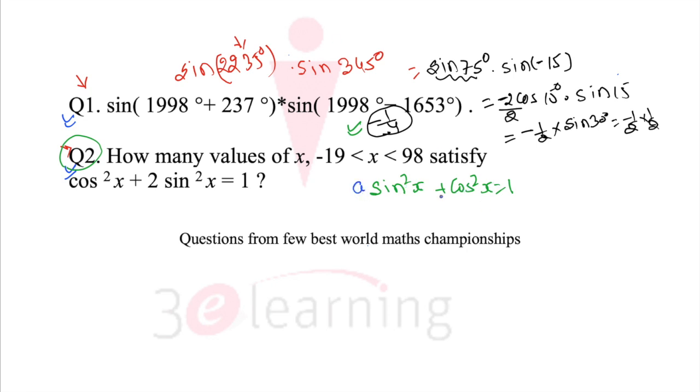But if we multiply by A, A sin²x plus cos²x equals 1 if and only if x is nothing but either 0 or 180 degrees, or in general term x is nothing but multiple of π.